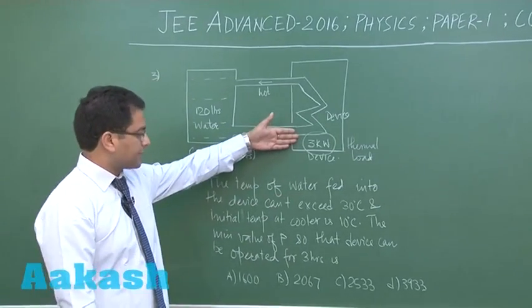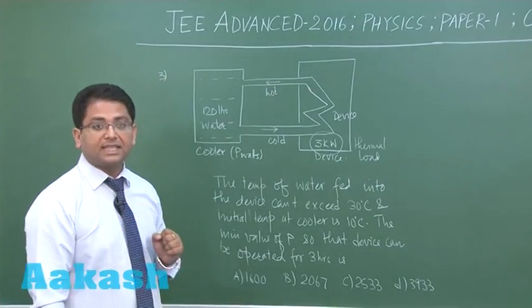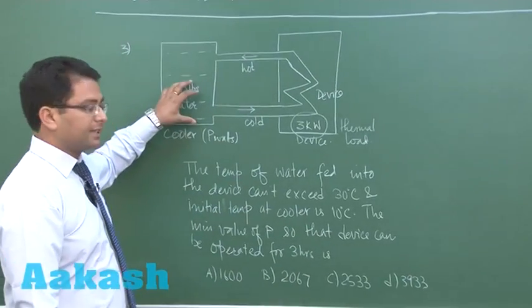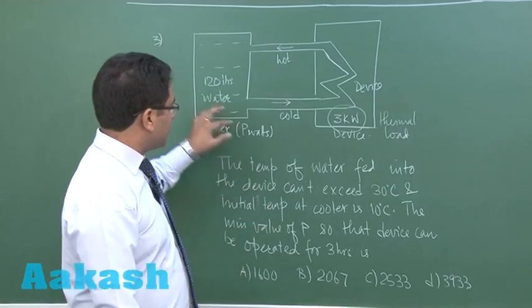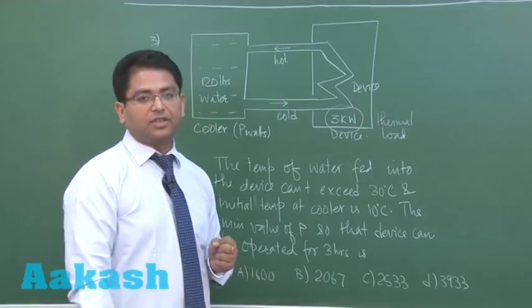The question is: the temperature of water fed into the device can't exceed 30 degrees Celsius. Initial temperature at the cooler is 10 degrees Celsius. Find the minimum value of P so that the device can be operated for three hours.